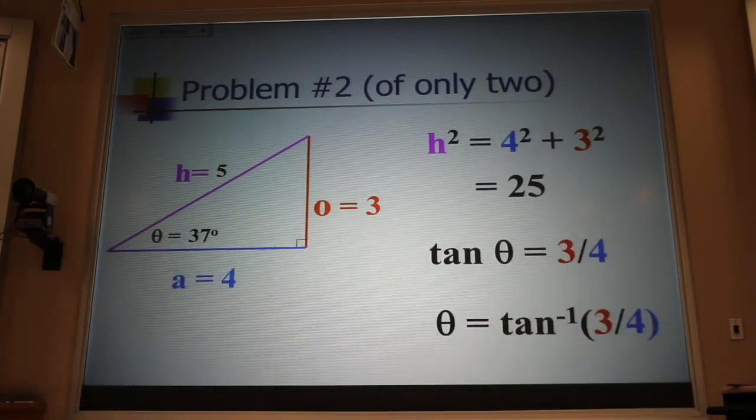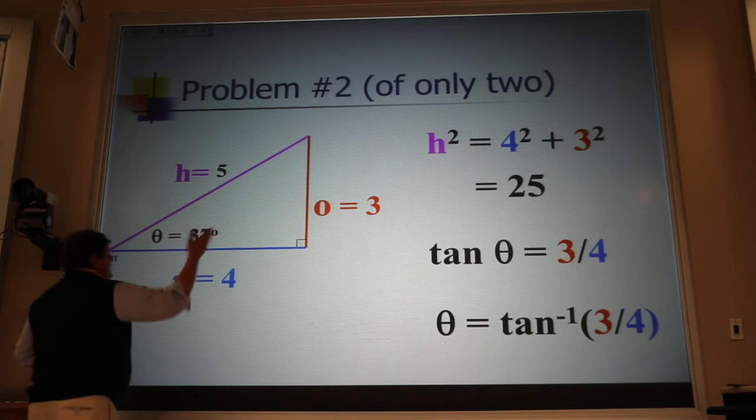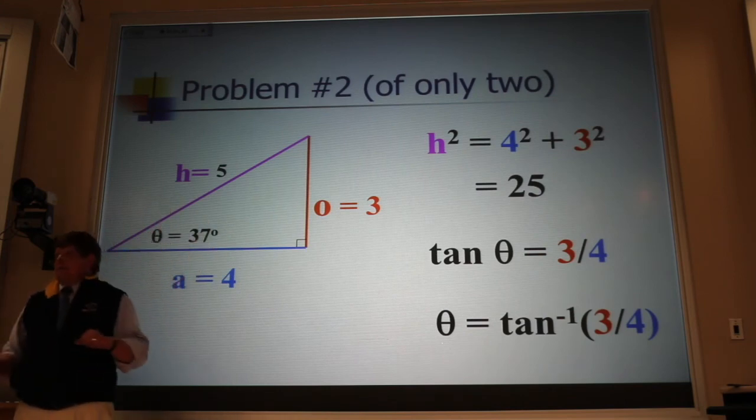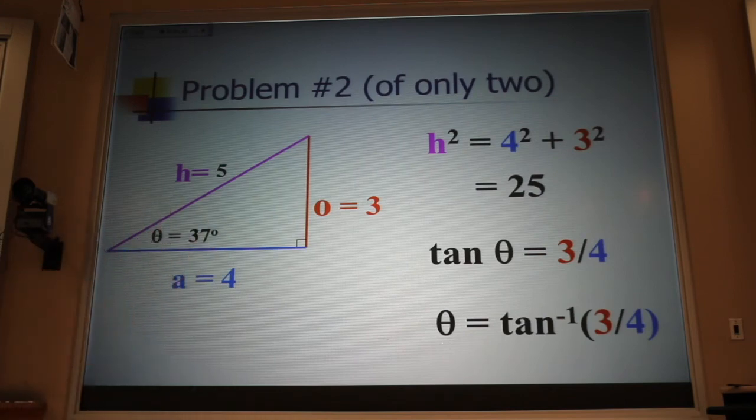Now, you're going to see that 37 degrees over and over and over again. And that's because that angle makes the math in the problem very, very easy. We call this a 3-4-5 triangle. And the math just works out simple.